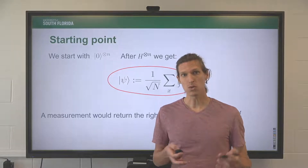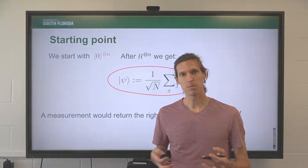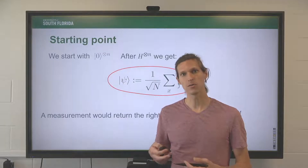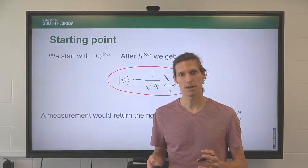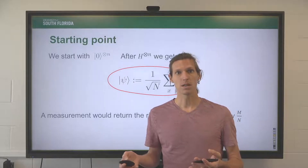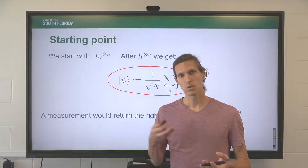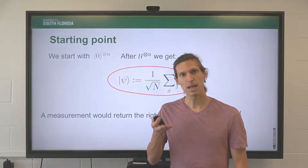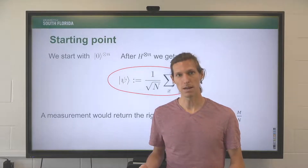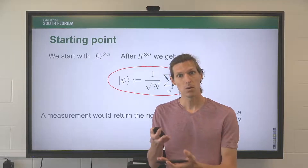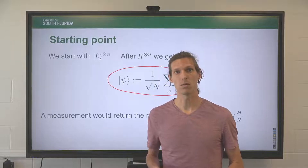What we need to do, with this state as input, is boost the probability — boost the amplitude of the coefficients that correspond to the basis states that we want to measure, which are the ones corresponding to the index of a marked element. So we're going to show what kind of circuit realizes this amplification of the coefficients corresponding to the elements where f(x) equals 1, while decreasing the amplitude of the ones we don't want to measure.